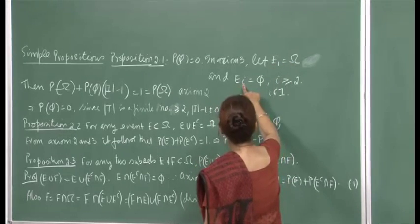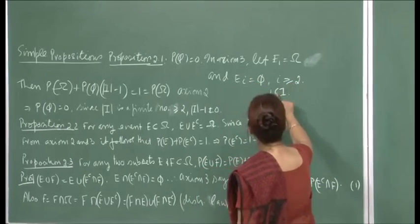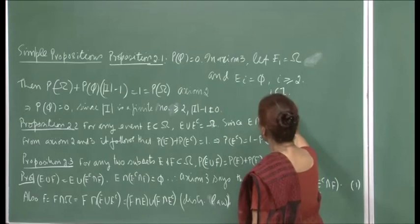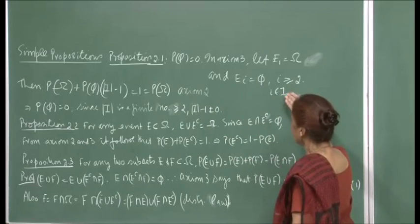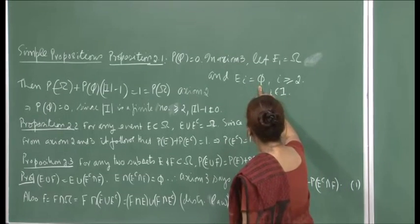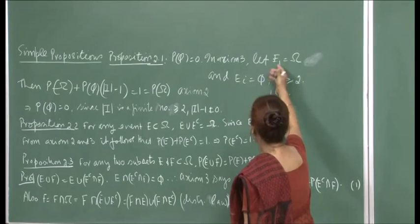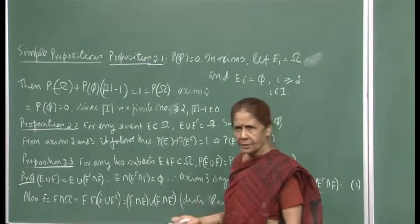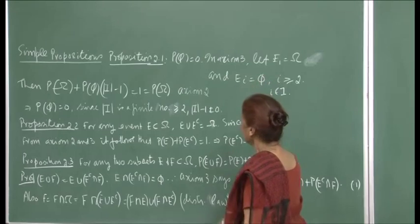In axiom 3, we take E₁ to be Ω and then all remaining Eᵢ's are empty, using a finite index set. So I have to just show that P(∅) = 0. The condition for axiom 3 is satisfied because E₁ is disjoint with an empty set, and all other sets are also empty, so they are disjoint.